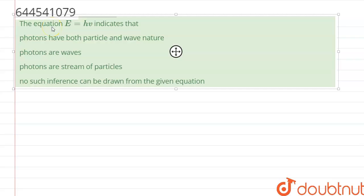Hello everyone, in this question we have been given the equation E equals H nu indicates that photons have both particle and wave nature, photons are waves, photons are streams of particles, or no such inference can be drawn from the equation.